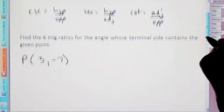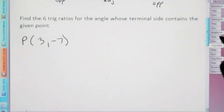We have here find the six trig ratios for the angle whose terminal side contains the given point. So 3, negative 7.